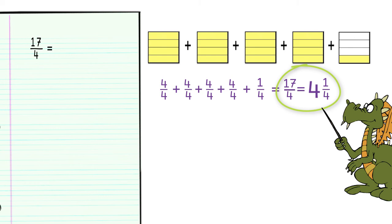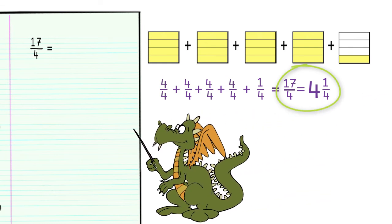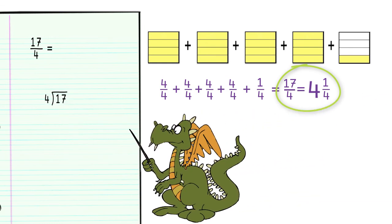Or we can remember that a fraction also represents division. So we can also divide 17 by 4. 4 goes into 17 four times, with 1 left over. We can think of the remaining 1 left over as 1 out of the 4 pieces we divided the whole into. And again, we see that 17 fourths is the same as 4 and 1 fourth.